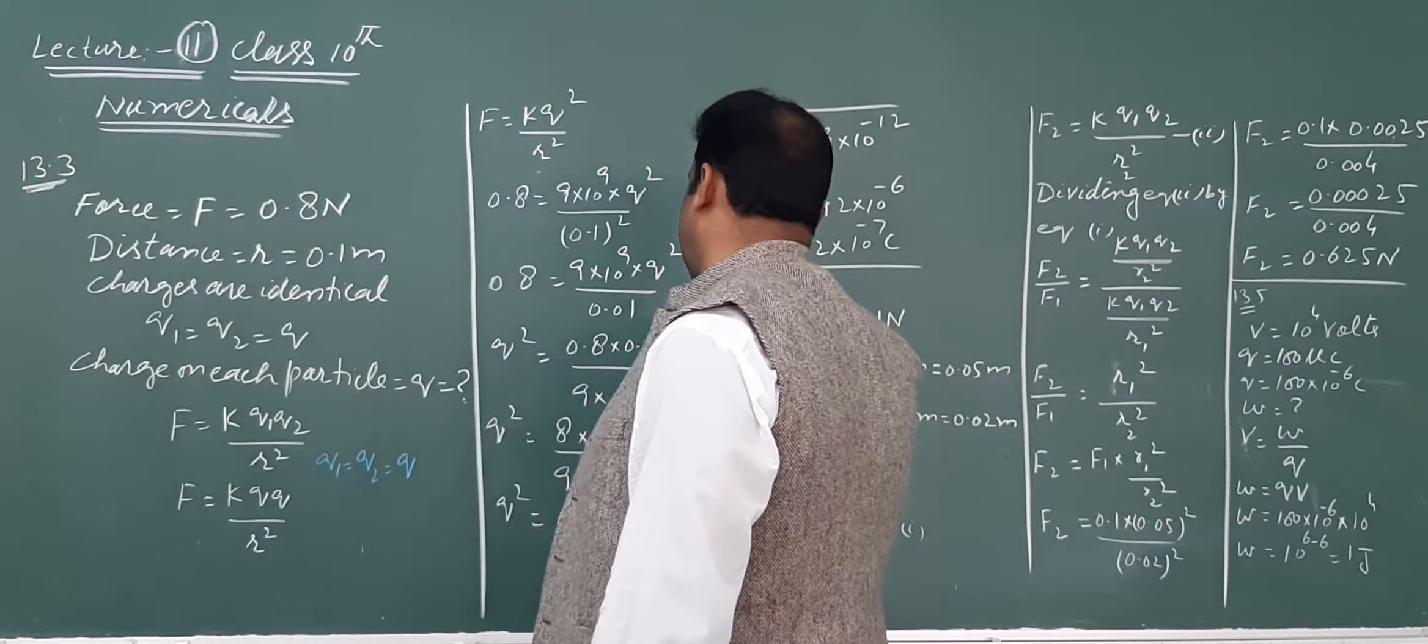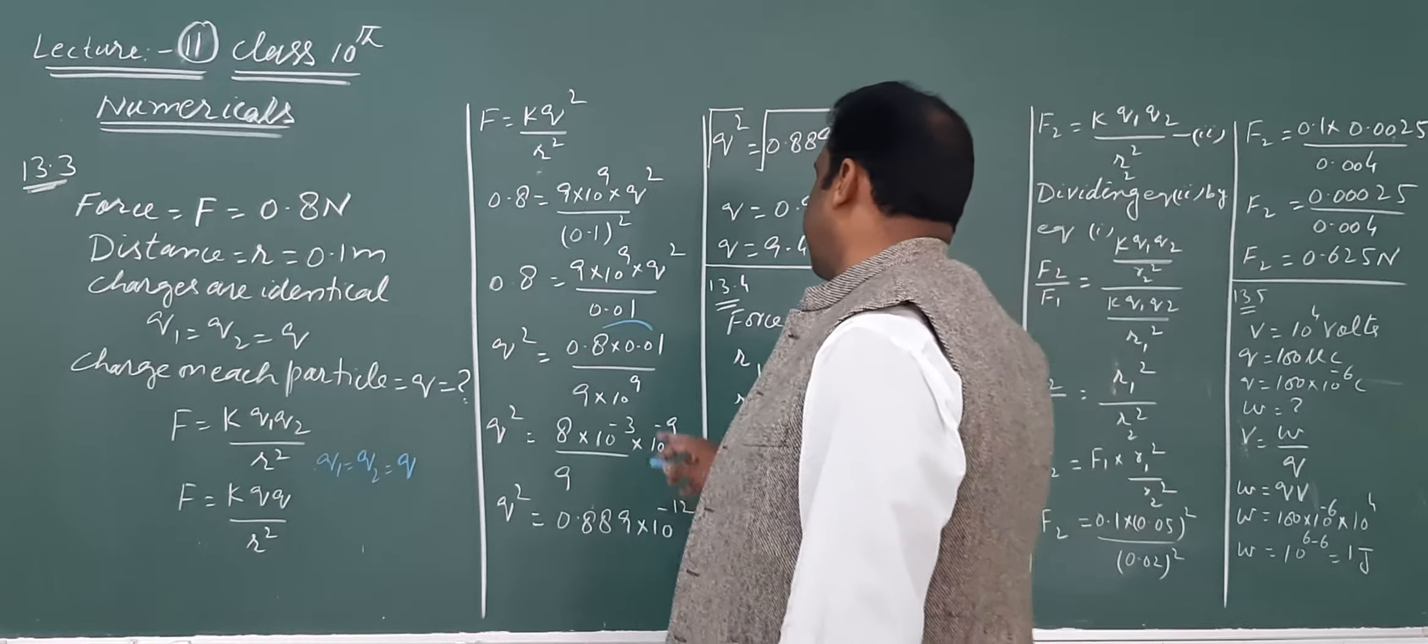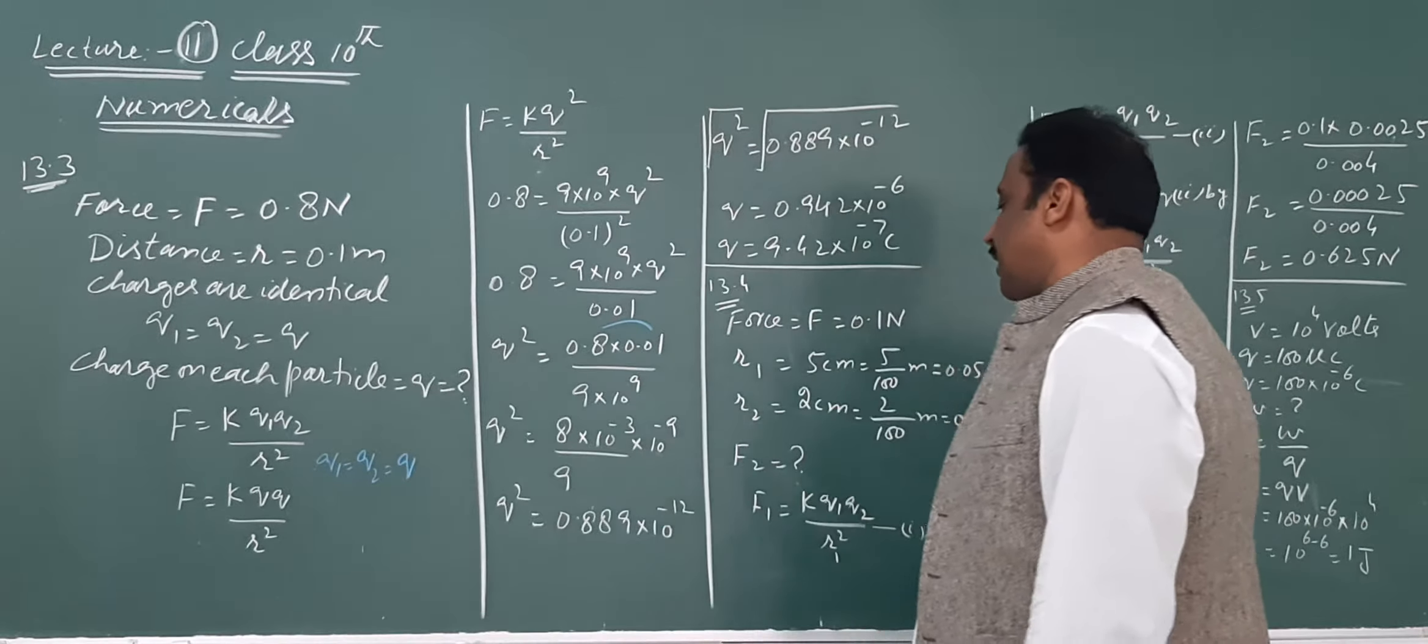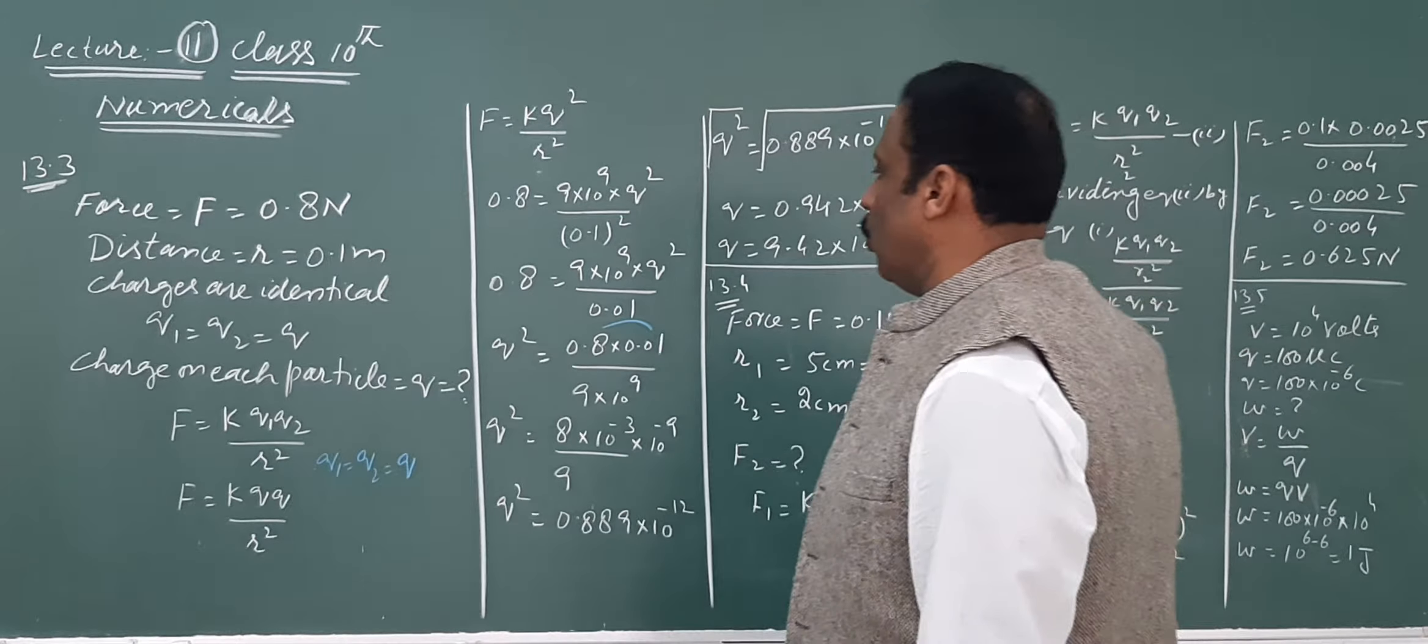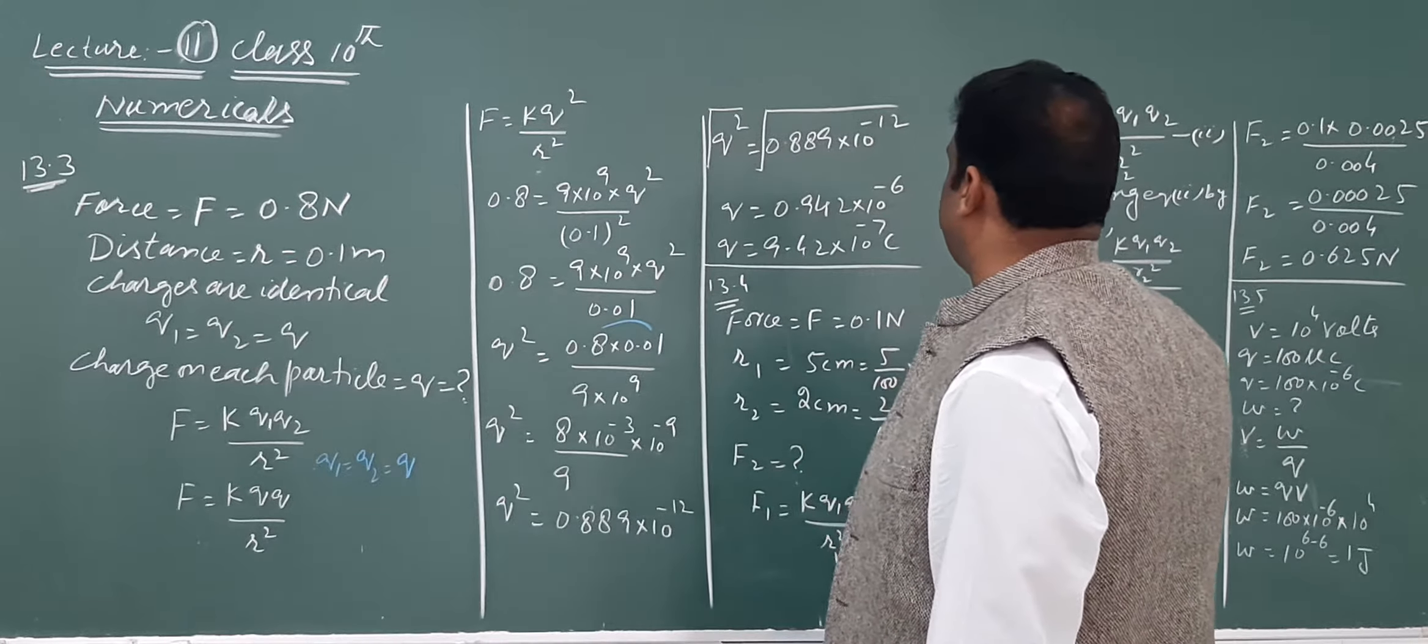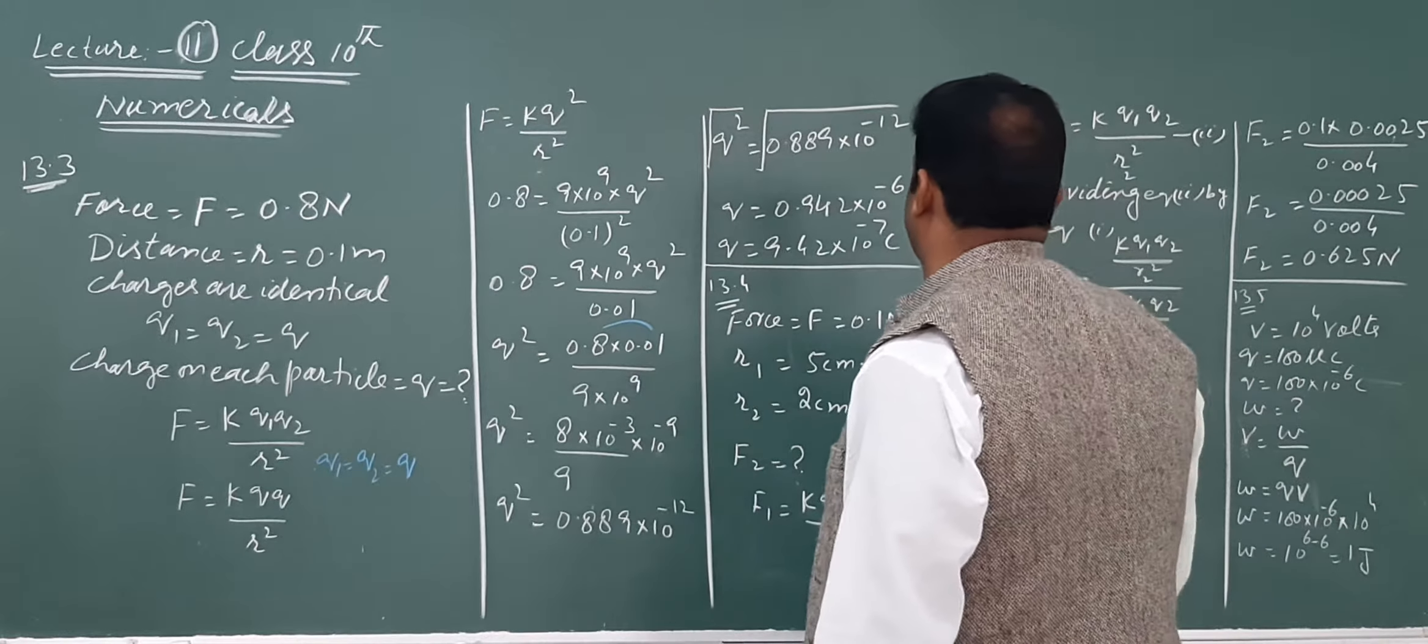Now we put the values: force is 0.8, k is 9 multiplied by 10 to power 9, Q squared, and r is 0.1 meter squared which gives 0.01. If we cross multiply, Q squared equals 0.8 multiplied by 0.01 divided by 9 multiplied by 10 to power 9.